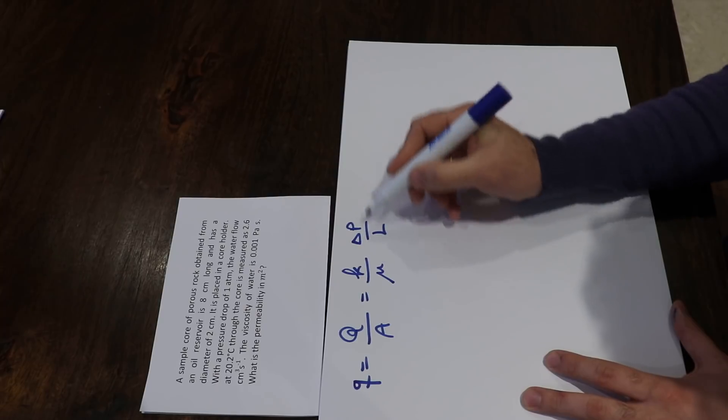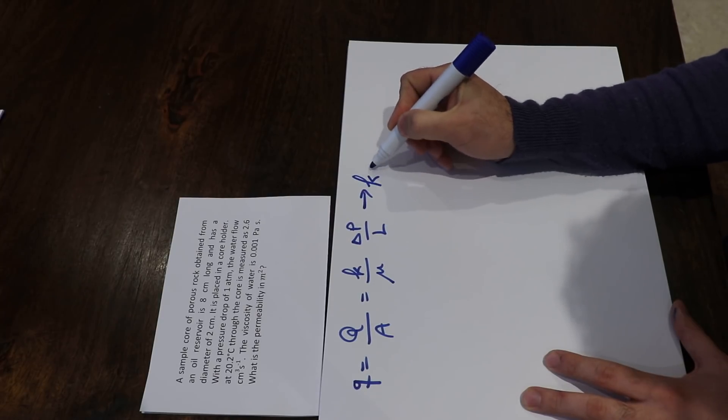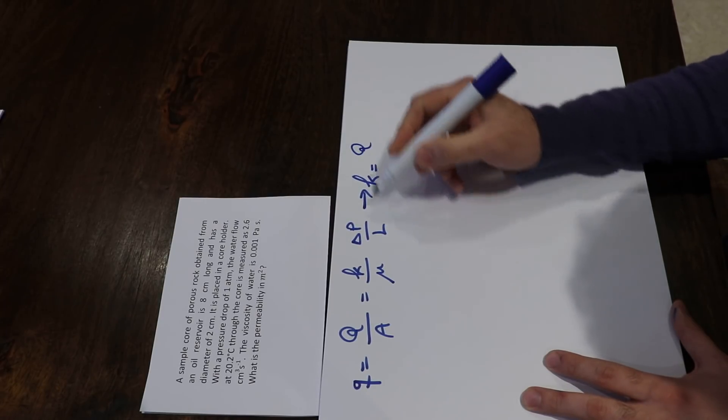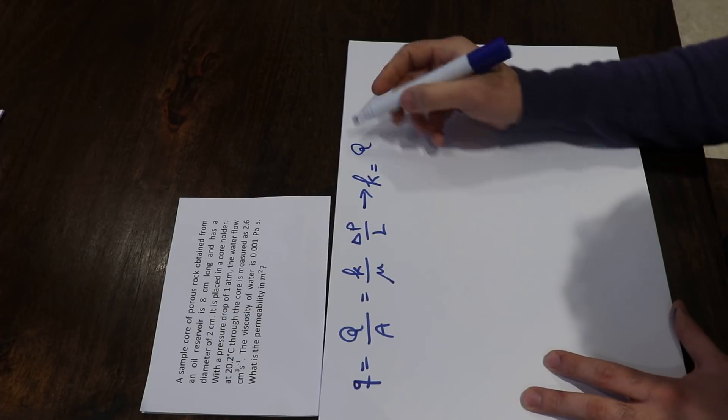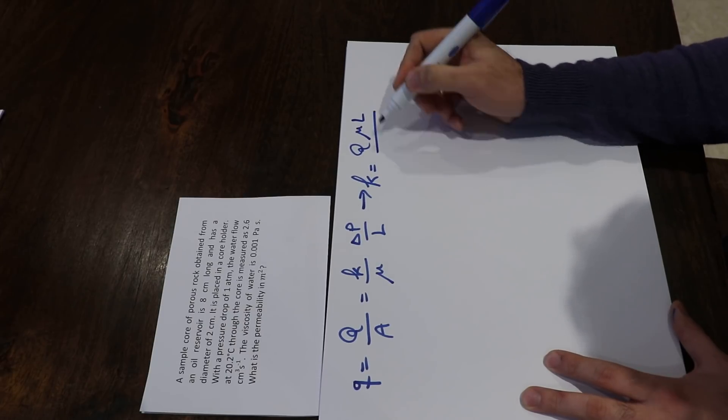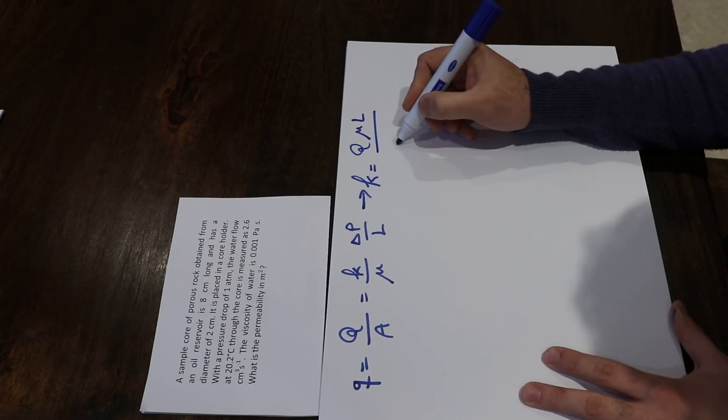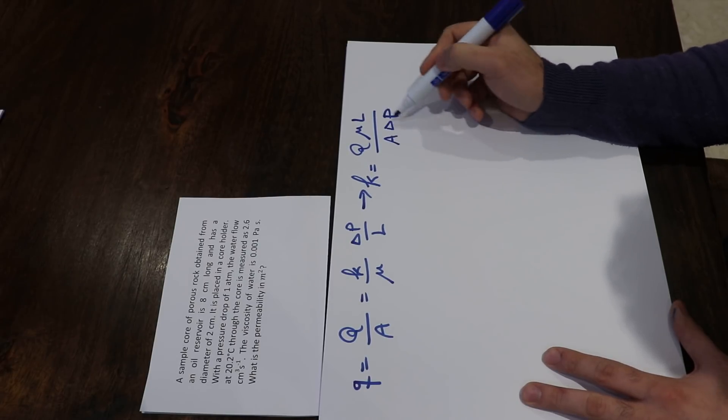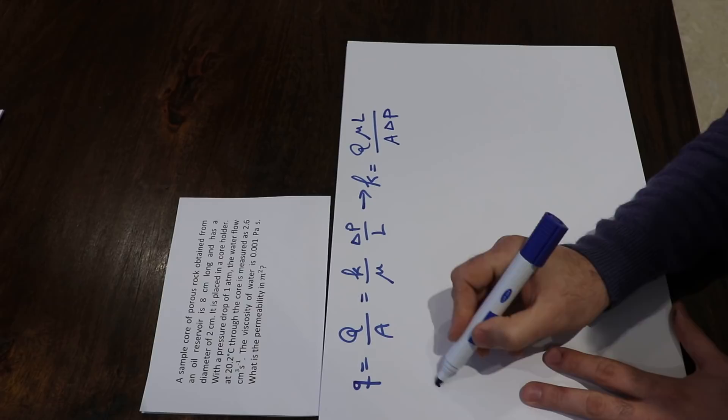From this equation, you can rearrange it to get K = Q × μ × L / (A × ΔP). You have all the values here, so you just plug in the parameters and calculate the permeability.